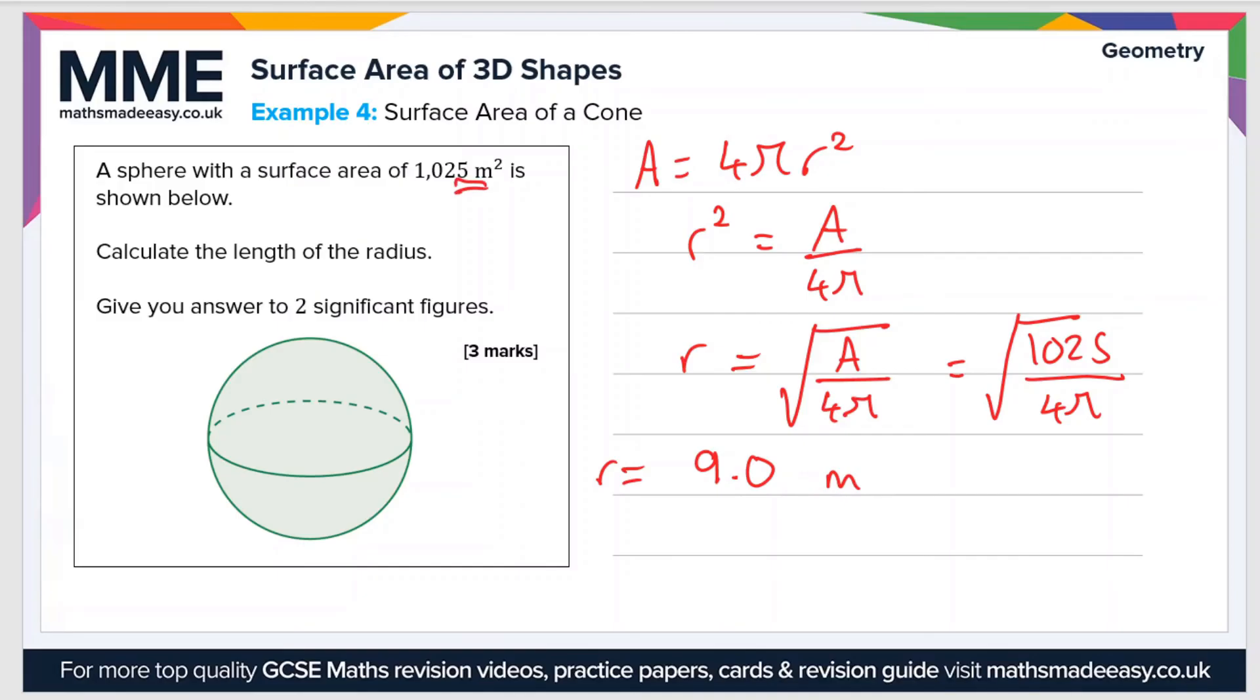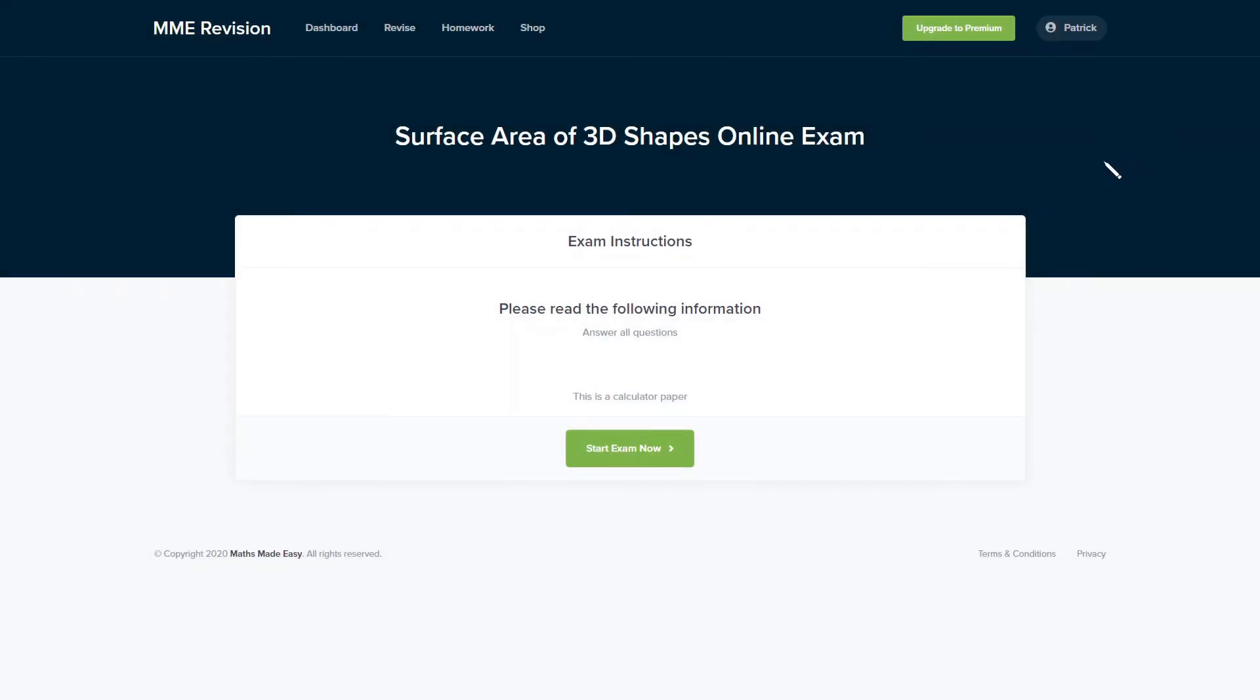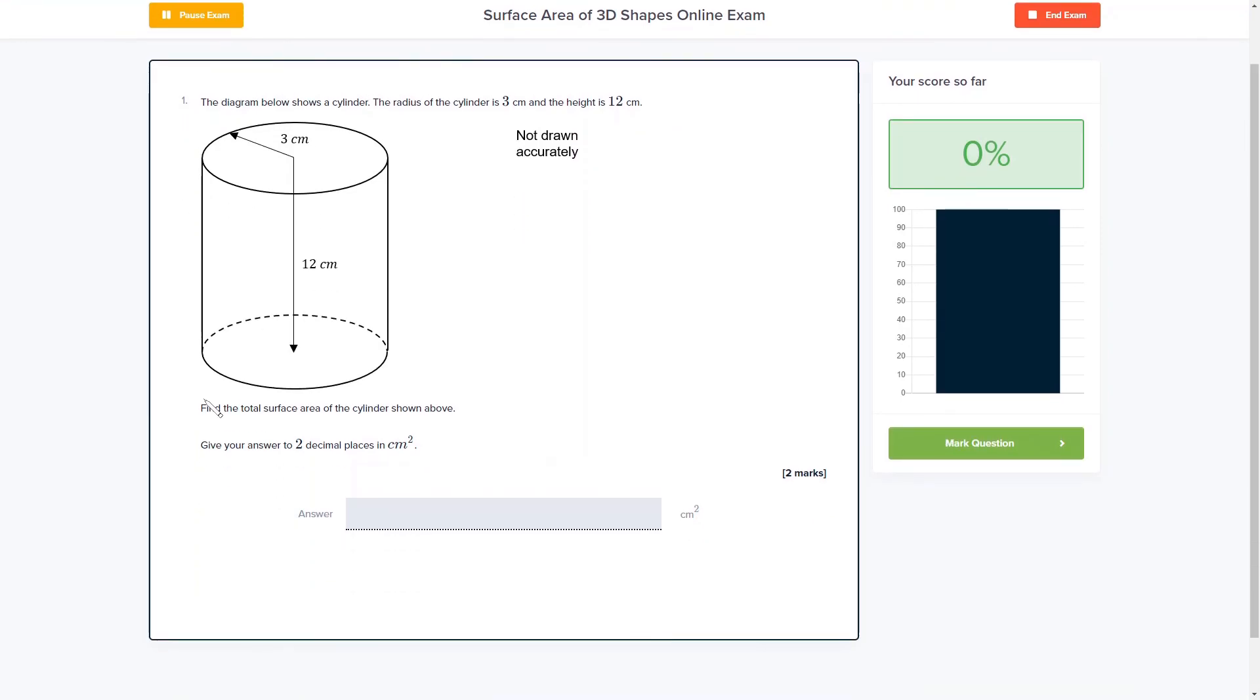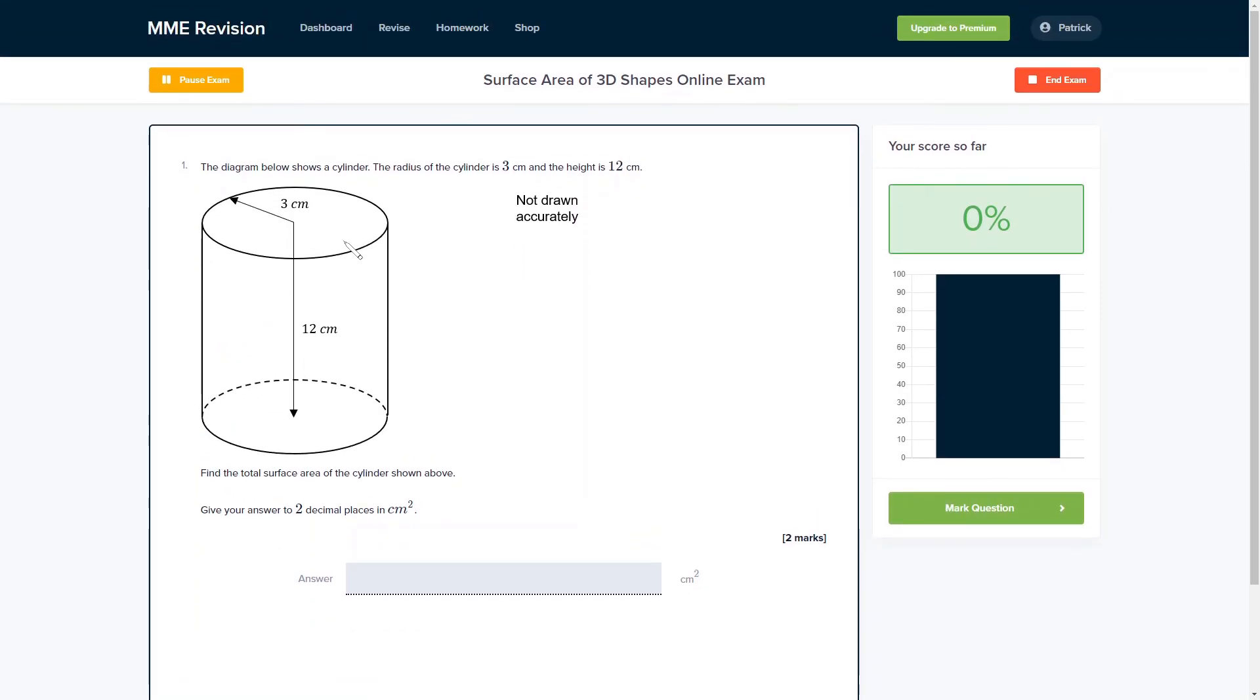If you want to practice this topic or see some exam-style questions on the surface area of 3D shapes, why not have a go at our online exam? You can get there through our revision platform. You'll find loads of different questions with a variety of question types, and you get instant feedback on each one. If you're interested, click the link below and it'll take you straight there.